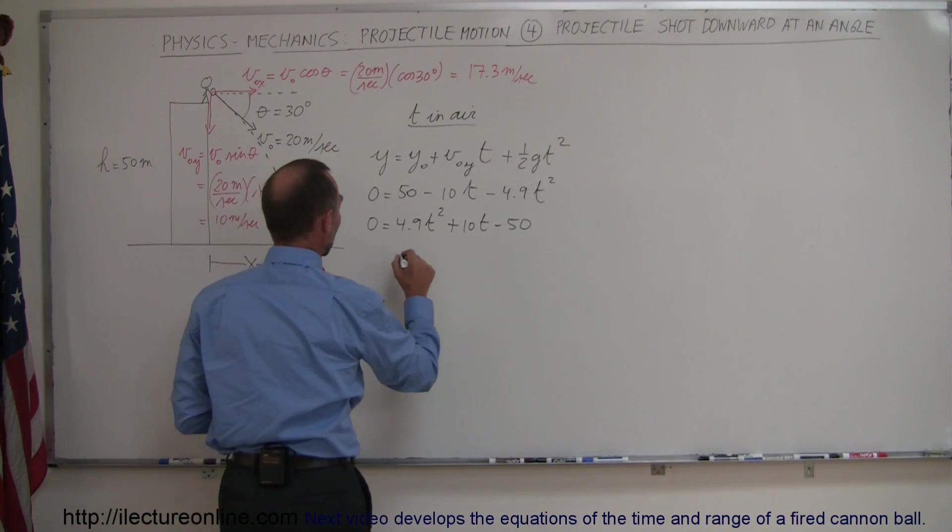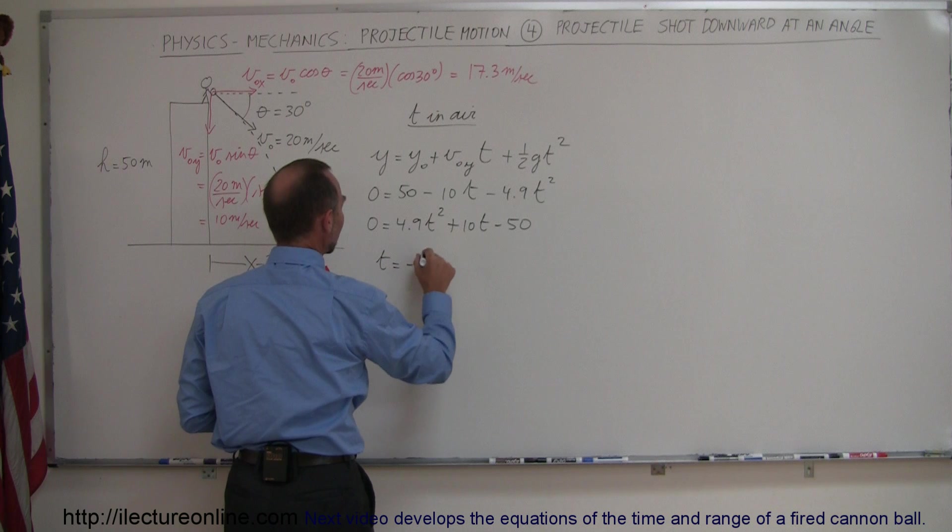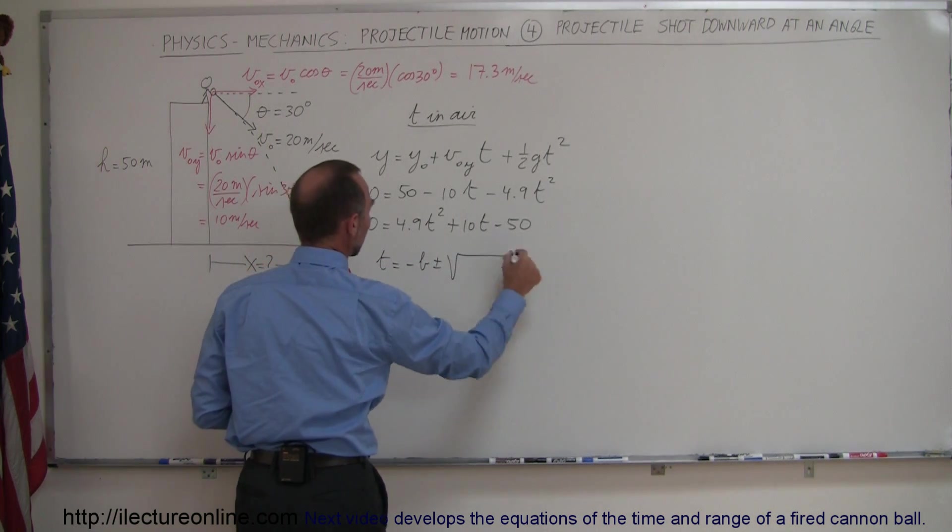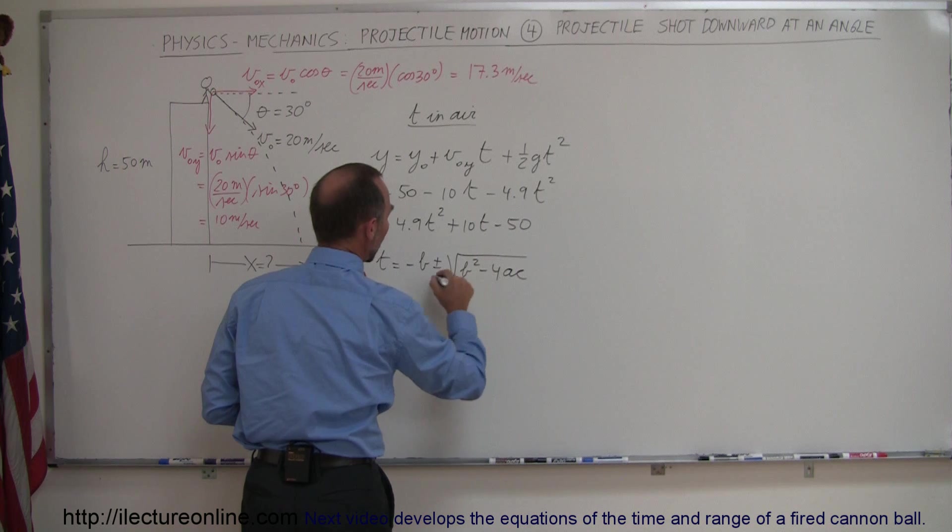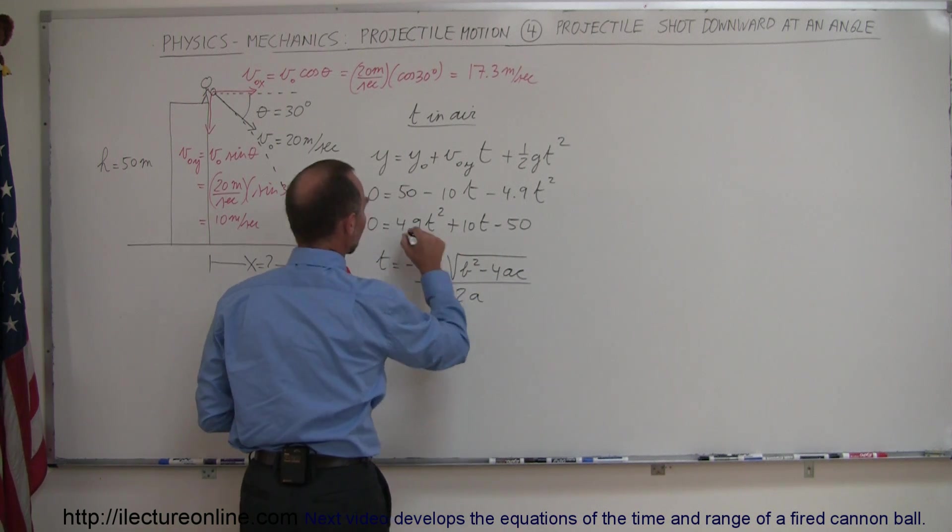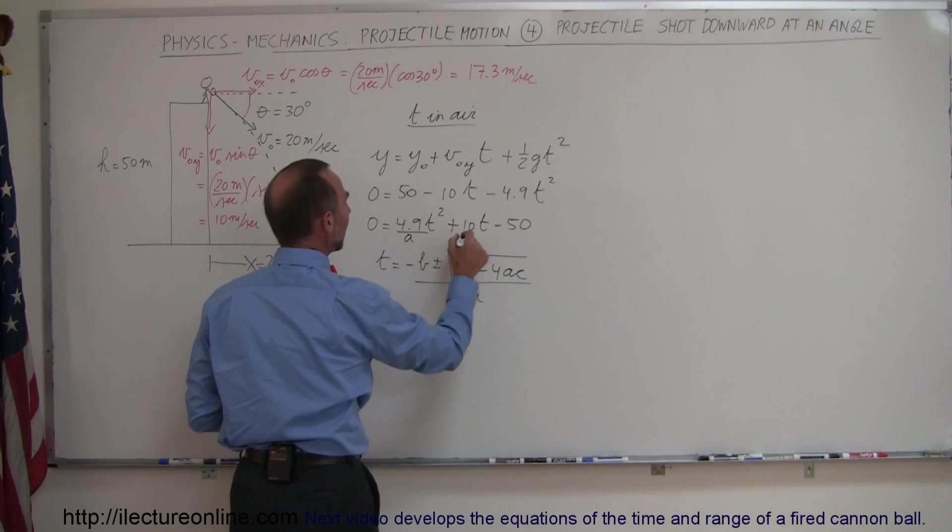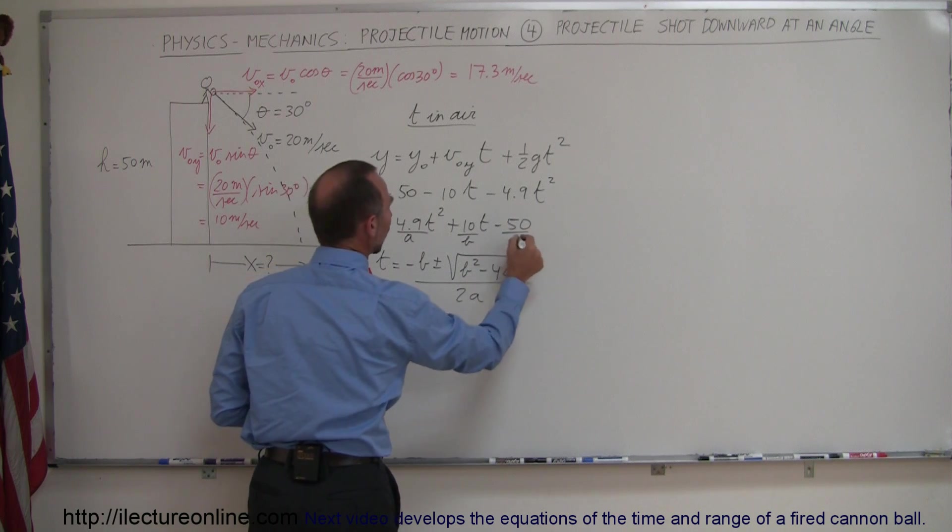And now we can go ahead and plug that into the quadratic formula where we can say that t is equal to minus b plus or minus the square root of b squared minus 4ac all divided by 2a, realizing that this coefficient is a, this coefficient is b, and this coefficient is c.